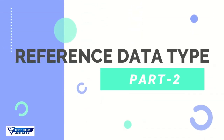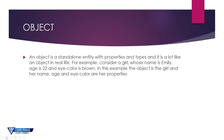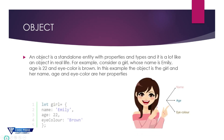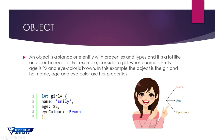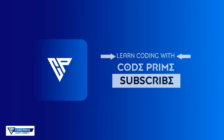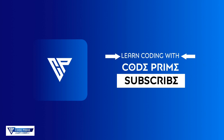Today we are going to learn about the reference data type part 2, which is the object type. An object is a standalone entity with properties. It is a lot like an object in real life. For example, consider a girl named Emily, age 22, with brown eye color. Her name and eye color are her properties. So basically this is the object data type, and we are going to learn it practically.